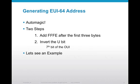The nice thing about EUI-64 addresses is that it's automagic — the system, router, or switch will do it for you. Since I'm a propeller head, and if you're watching this you probably are too, we want to know how it gets there. It basically happens in two steps. The first thing we do is add FFFE after the first three bytes of the MAC address, right in the middle. The second thing we do is invert the U-bit, which is the seventh bit of the MAC address.